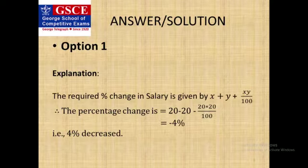The formula is x plus y plus xy by 100. I repeat: x plus y plus xy by 100. In this question, x is 20 percent and y is minus 20 percent because there's a decrease. So the formula gives us 20 minus 20 minus 20 into 20 by 100, which is coming minus 4 percent.